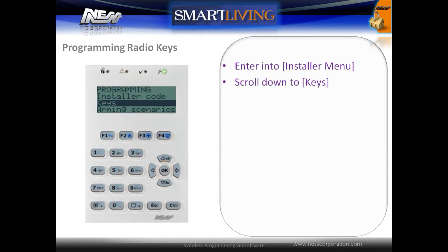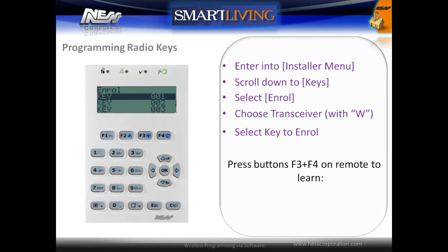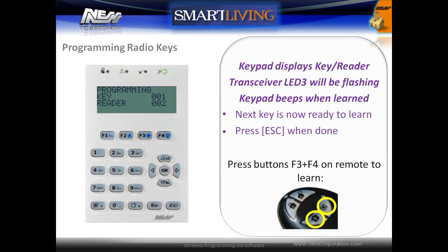To enroll a radio key, enter the installer menu and scroll down to keys. Select the enroll option and then choose the transceiver, which is the reader with a W next to it. Select a radio key to enroll and then on the radio key, press the bottom two buttons, F3 and F4, together. When enrolling, the keypad displays the key and reader currently being enrolled, and the transceiver's LED number 3 will be flashing. Once enrolled, the keypad will beep and progress to the next key automatically. Continue learning additional keys and then press the escape key when done.